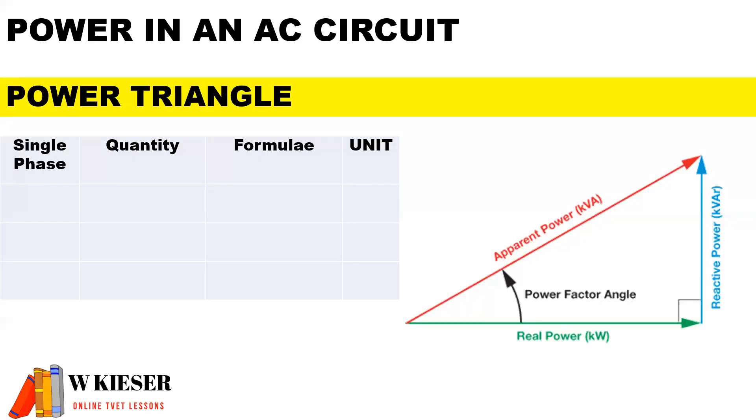We have power in an AC circuit represented by the power triangle. We have the apparent power measured in KBA, the reactive power measured in volt amps reactive, and the real power measured in kilowatts. We have our phase angle between those values.